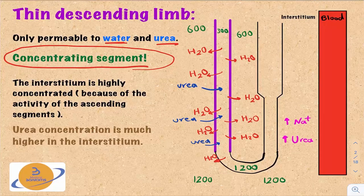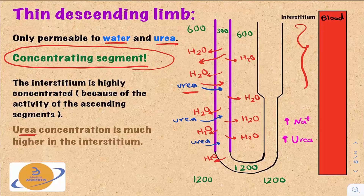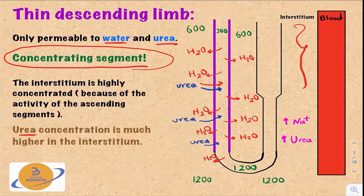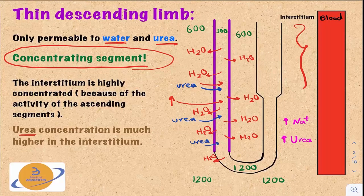Water moves from the lumen of the Loop of Henle to the outside because the interstitium is much more concentrated, due to the activity of the thick ascending limb. Urea, being at higher concentration in the interstitium, moves passively into the tubular lumen along its concentration gradient without requiring energy.